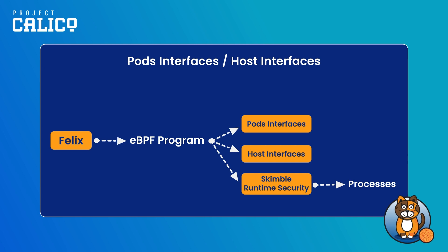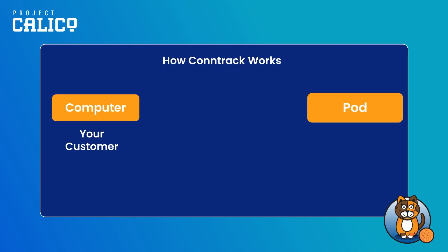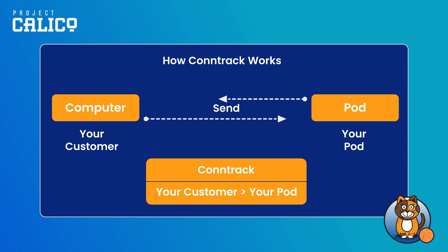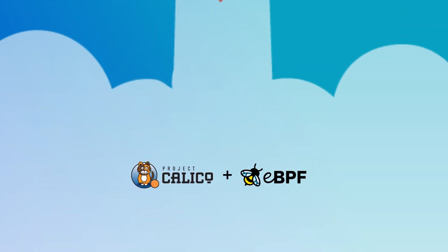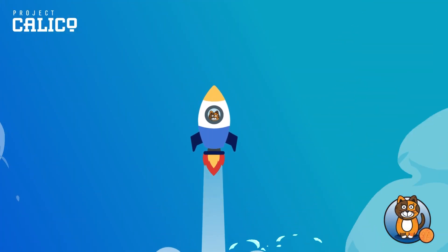By default, Linux is stateless — meaning if a packet comes in, it doesn't know where it should be returned to unless explicitly instructed. Most Linux operating systems use a component called conntrack, a table with records of packets and their origin that Linux receives and forwards to your applications. These records are then used to return the response packet to you. In eBPF mode, Calico creates a conntrack table using BPF maps and programs, increasing your networking efficiency and lowering the latency of your services.